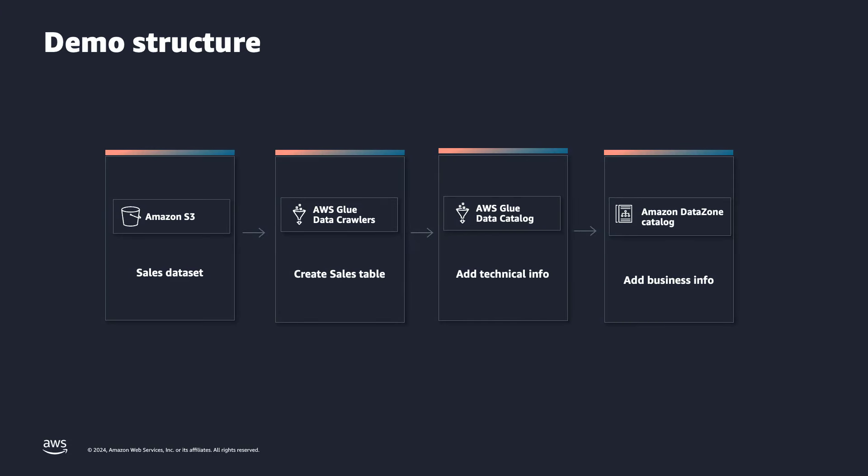We learned a little more about the technical data catalog that AWS Glue offers and also the business data catalog that Amazon DataZone offers. Now let's see them in action — we have a demo for today's presentation. We are going to start by adding some Parquet files to an S3 bucket, specifically a sales-related dataset for a retail company.